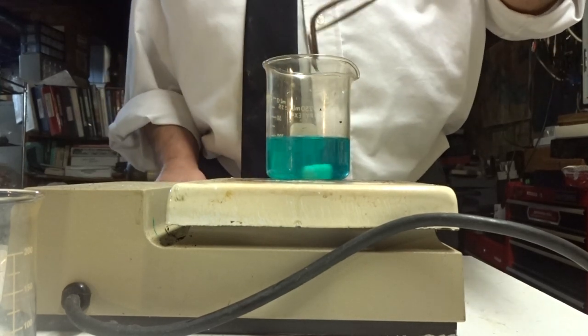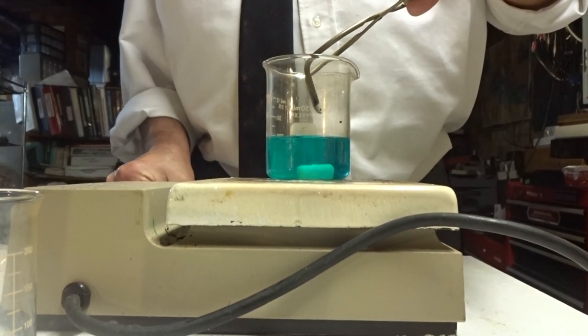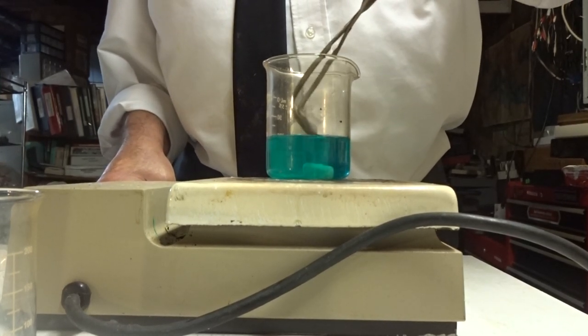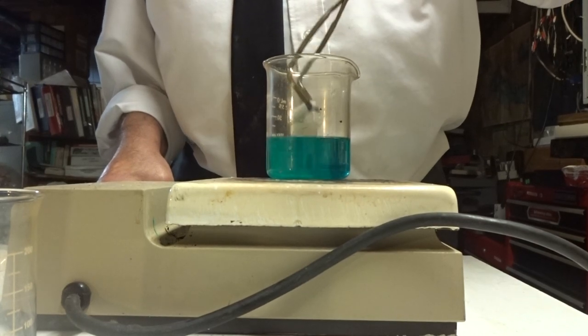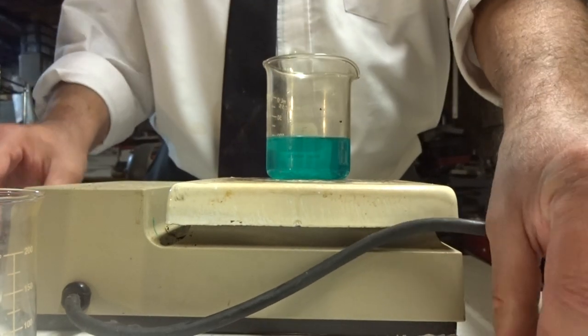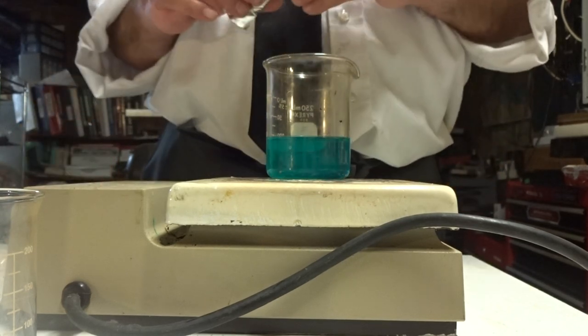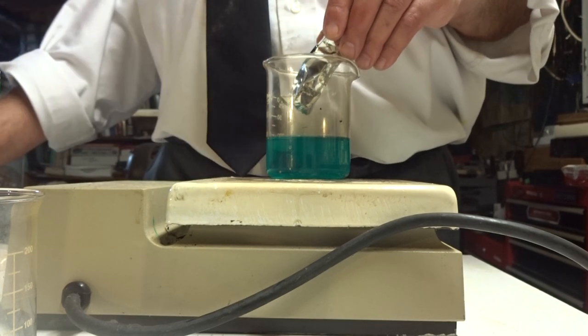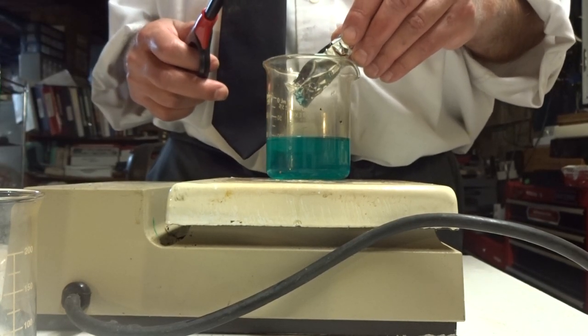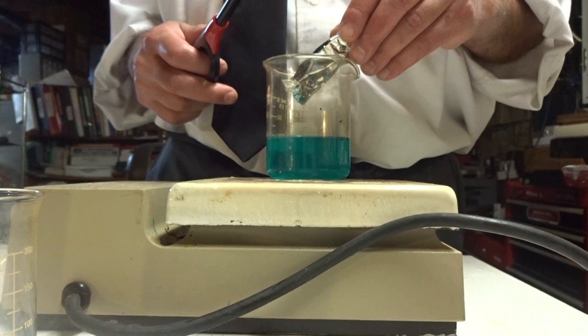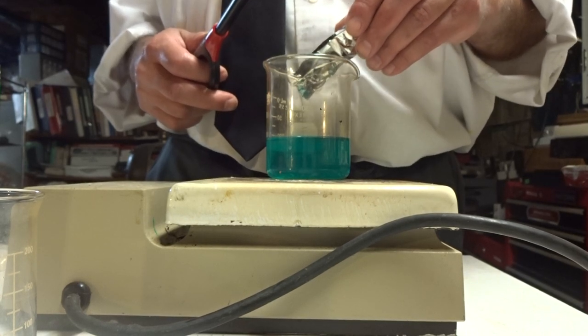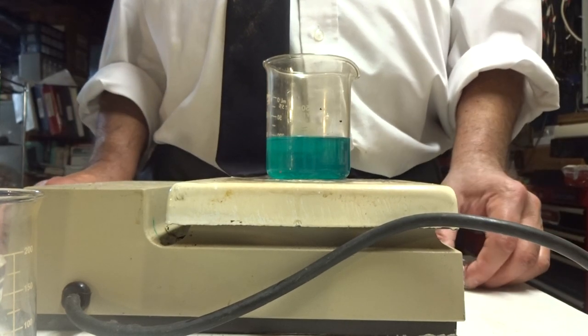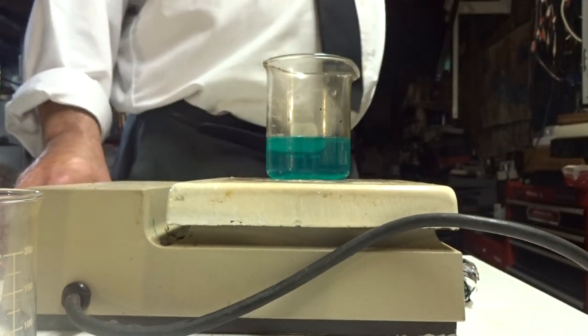That looks like it's all mixed. Now I'm going to add the aluminum foil. I'll place it in there and then light it with a lighter because the single replacement reaction is going to produce hydrogen gas which is flammable. But I need to turn the light off so you can see the flame.